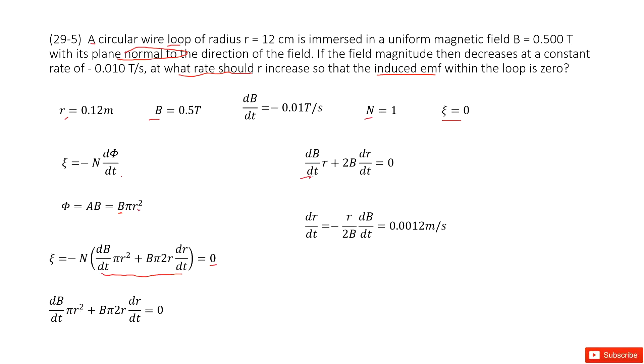And then we can cancel pi and r. Simplified, it looks like this. And then we write the term we're interested in, dr/dt, in this function. And then input all the given quantities, and you get the answer there. Thank you.